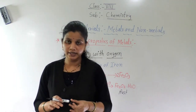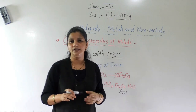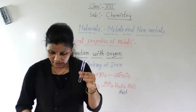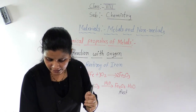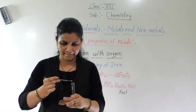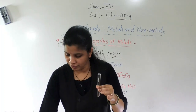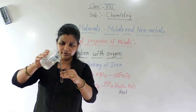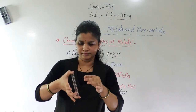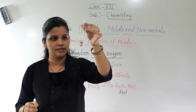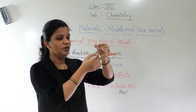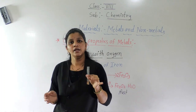In your NCERT textbook, there is Activity 4.3 given. We will perform that activity now. First, we take one test tube. In this test tube we will add this rust powder, then a little amount of water, and shake it well. In your textbook this activity is given. Here two layers are visible — it is a suspension of iron.